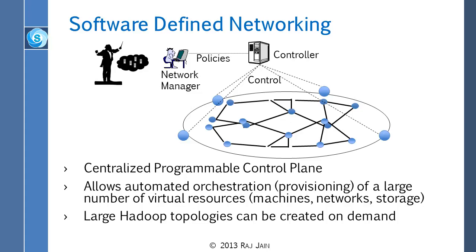They don't need hardware for the control part — they just need the hardware for the forwarding part, the data plane, so they can be cheaper. So that is one thing: software-defined networking gives you a centralized control plane. The second thing it gives you is programmability. Now that the control plane is in one computer, you can put any policies you want, and you can change the policies any time you want. And it goes to all the switches at the same time.